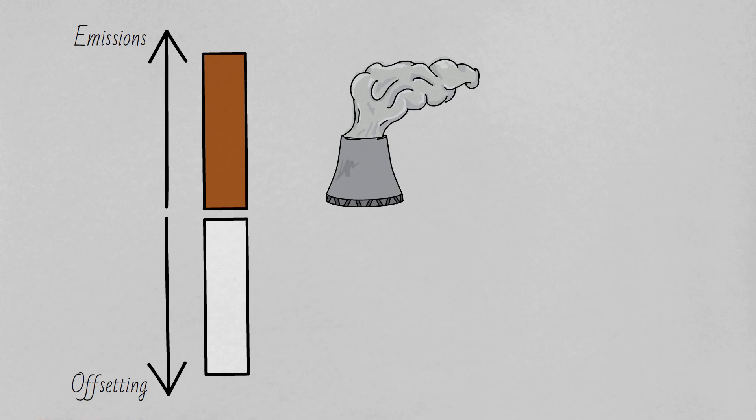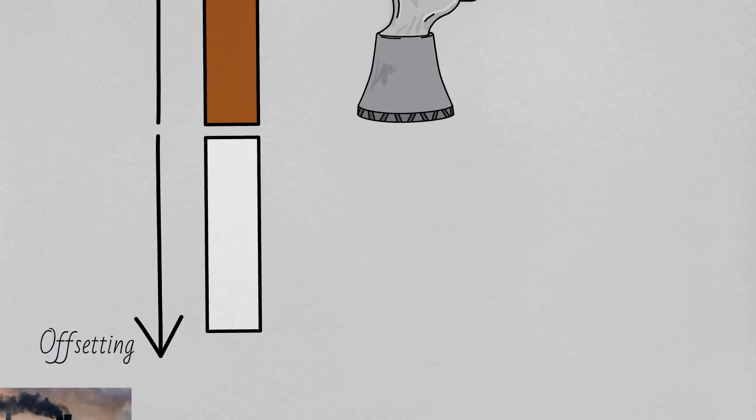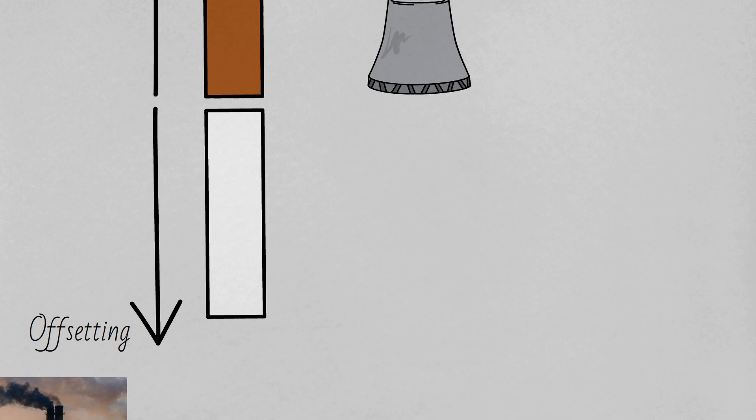Now this carbon offsetting can be done in a few ways. First, carbon currently in the atmosphere can be removed. This is called carbon sequestration and could be done by, for example, planting more trees or what's called reforestation.